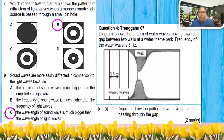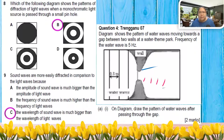Question four shows the pattern of the water wave moving towards a gap between a wall, with frequency of five hertz. Draw the wave pattern after passing through the gap. You need to measure the gap and also lambda. If both are almost the same, the wave is still circular. If the gap is smaller, more circular; if the gap becomes bigger, less circular. Here they are almost the same, so I draw circular - a little bit circular - and the wave pattern is diffracted and spreads out.